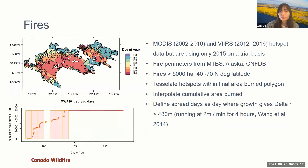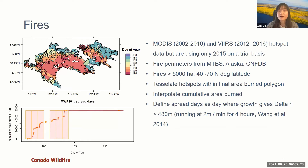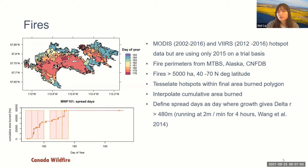The final fire perimeters are from MTBS, Alaska fire management agencies, and the Canadian National Fire Database. We include fires larger than 5,000 hectares, because we want to study more extreme fire events, and fires between 40 to 70 degrees latitude. To map daily fire progression, we first tessellate the hotspots within the final area-burned polygon, then interpolate to the accumulated area burned over the past 24 hours.